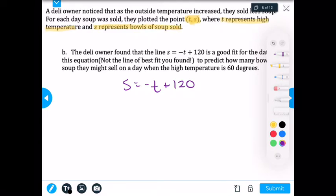So we know from this, we're trying to figure out how many bowls of soup they might sell, but we know that the high temperature that we're figuring out is 60 degrees. So think about for a minute, what variable would I plug in 60 degrees for? I have two options. I have T, and I have S. I agree. Temperature is represented by T. So I'm going to plug in for T.